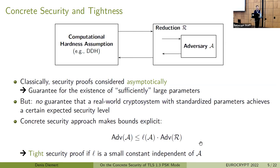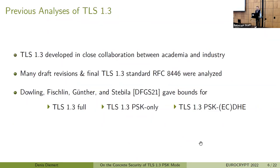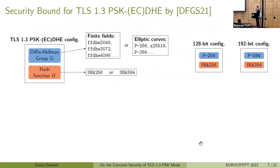The question now is how tightly secure is TLS. TLS 1.3 was the first version developed in close collaboration between academia and industry, so there were already many analyses during the standardization process. I'd like to focus on the result by Dowling et al., as it's the most complete computational analysis we have at the moment. Since we are focusing on the PSK modes, let's look at their result on PSK-ECDHE. Their security proof reduces the security of TLS PSK to its building blocks: a Diffie-Hellman group G with finite field and elliptic curve options, and a hash function H, either SHA-256 or SHA-384.